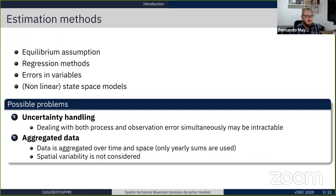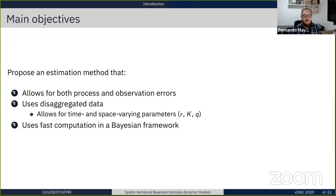The main objective of our work is to propose a method that allows for both process and observation errors, uses disaggregated data, which means we can use area and year data, and this allows for time and space varying parameters, which can be a good thing for fisheries management. One of the objectives also is to use fast computation methods specifically in a Bayesian framework.